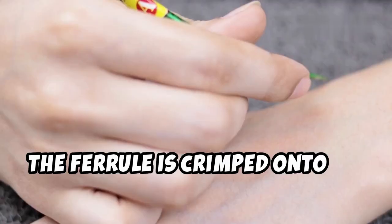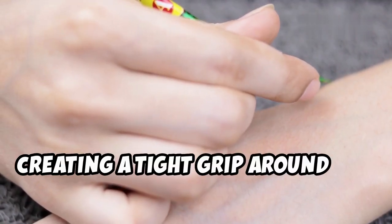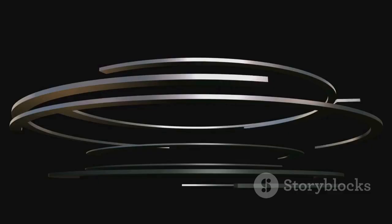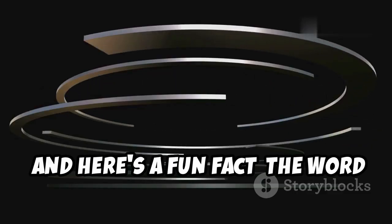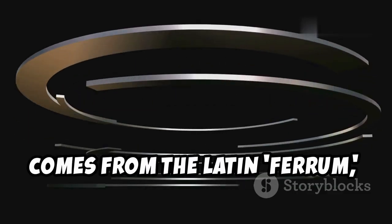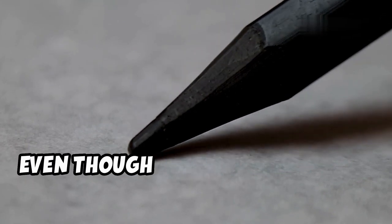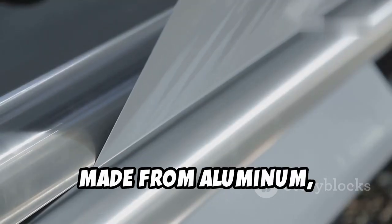The ferrule is crimped onto the pencil, creating a tight grip around the wood and the eraser. And here's a fun fact. The word ferrule comes from the Latin ferrum, meaning iron. Even though most ferrules today are made from aluminum, the name stuck.